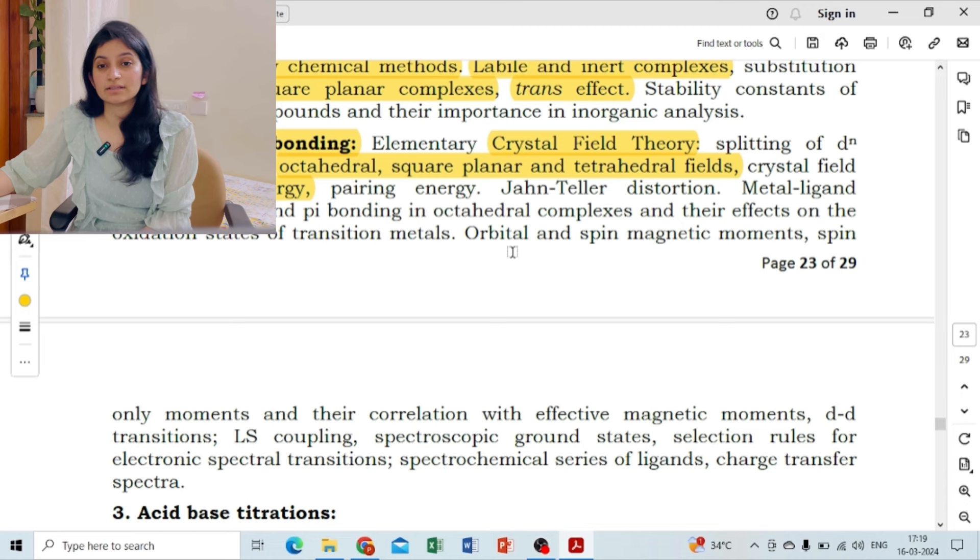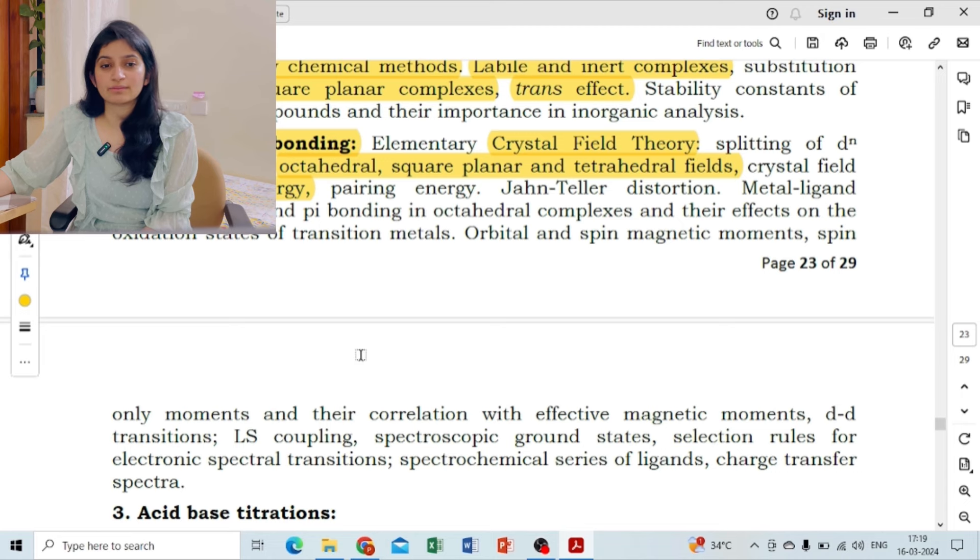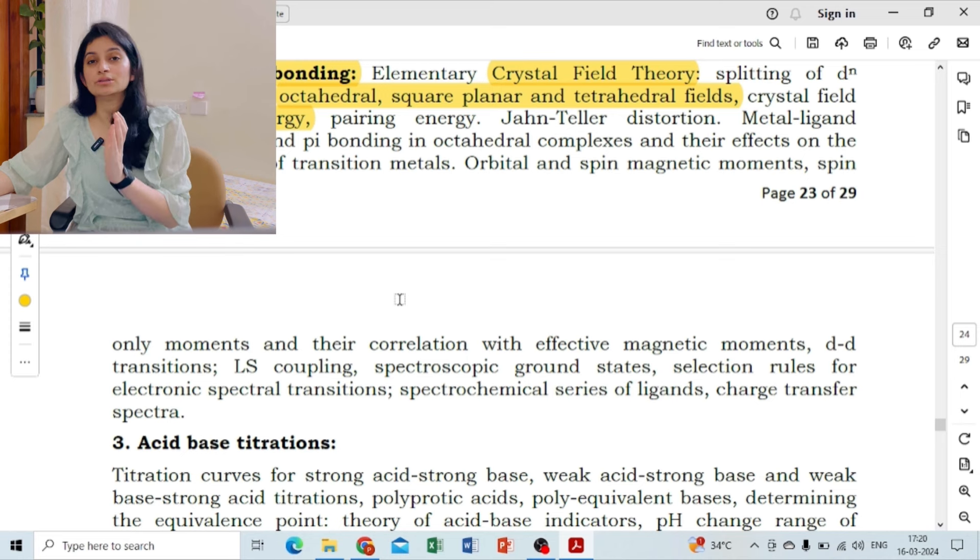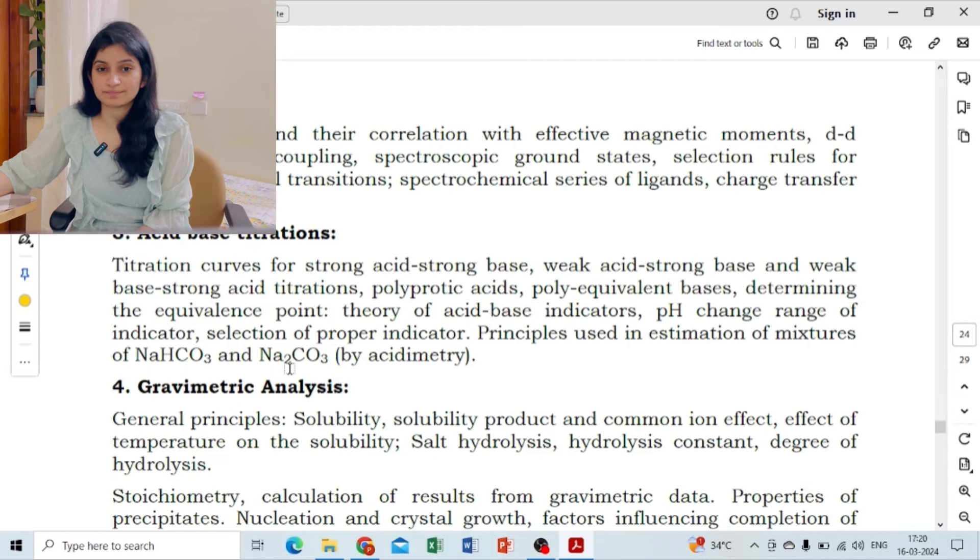The stability constant of coordination compounds, structure and bonding - what are the theories in coordination chemistry like CFT splitting. This was the question in my time - splitting of octahedral and tetrahedral both. Crystal field stabilization energy. If you read every topic, you will realize every topic will be in your notes because this is the whole Net-Gate. John-Teller effect, metal-ligand bonding, sigma-pi bonding, orbital magnetic moments, spin-only moments.